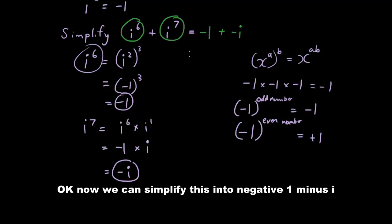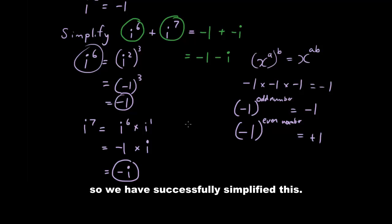So we can simplify i to the power of 6 plus i to the power of 7 into negative 1 minus i. We have successfully simplified this expression.